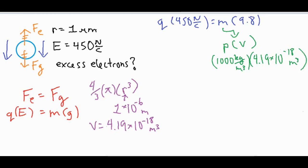Let's go ahead and plug that in over here: 4.19 times 10 to the negative 18th meters cubed. Once we take 1000 times 4.19 times 10 to the negative 18th times 9.8, the final product of those numbers is 4.11 times 10 to the negative 14th newtons. Then we can set that to q times 450 newtons per coulomb. If we divide both sides by 450, then we have our q value.